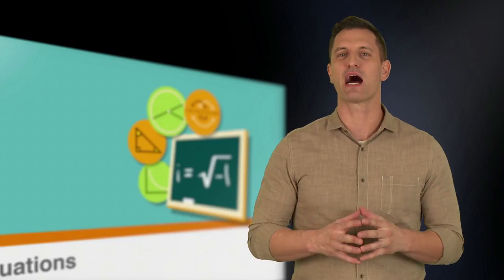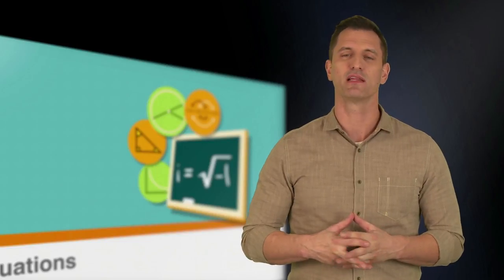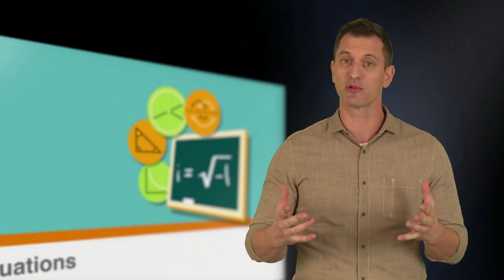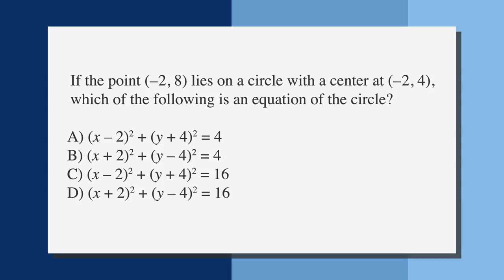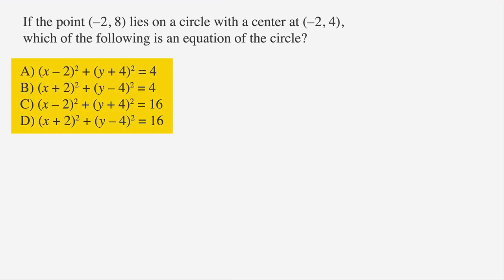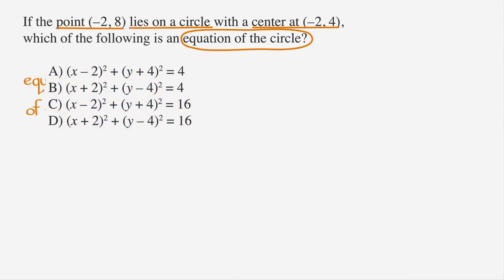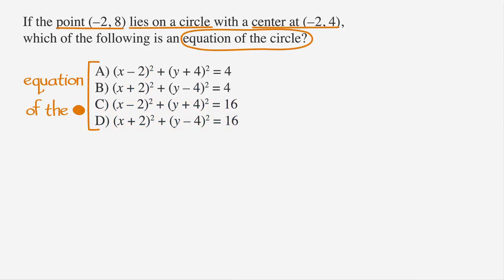Now that we've learned how to work with the equation of a circle, let's take a look at a practice question similar to something you might see on the SAT. If the point (negative two, eight) lies on a circle with a center at (negative two, four), which of the following is an equation of the circle? Let's underline the facts, circle the keywords, and label the answer choices. We're looking for the equation of the circle.